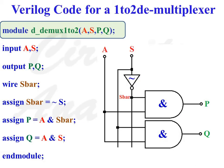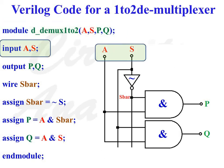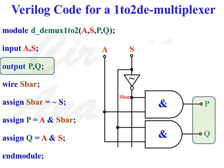Now let us discuss the Verilog code for a 1 to 2 demultiplexer. The first line of the Verilog code is: module D_DMUX1to2 (A, S, P, Q); This line specifies the module name as D_DMUX1to2 with ports A, S, P, and Q. Input A and S are the two input ports of the module. The next line is: output P, Q; — this defines P and Q as the two output ports of the module.